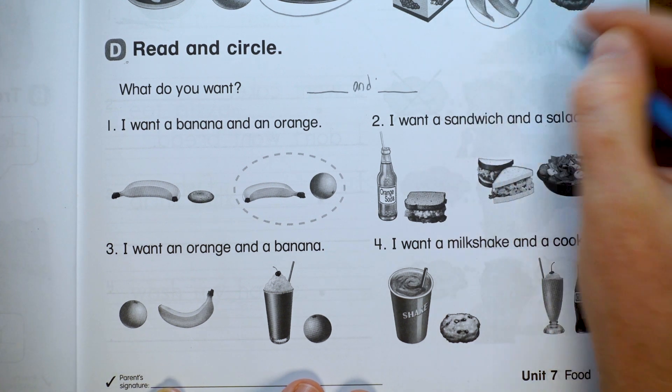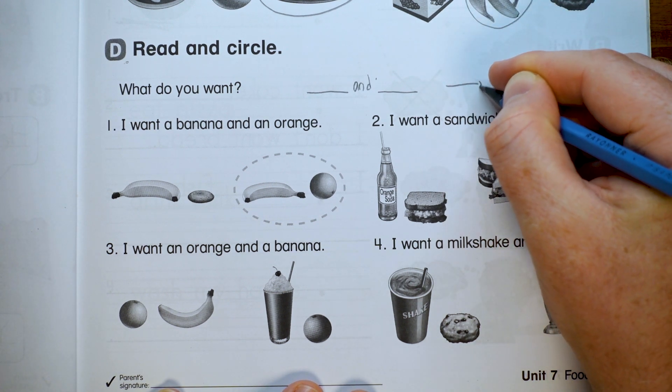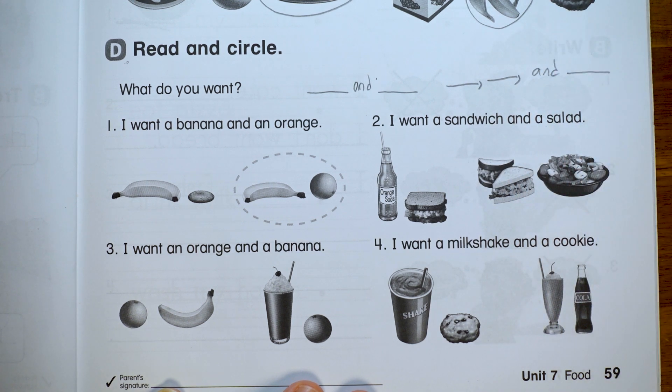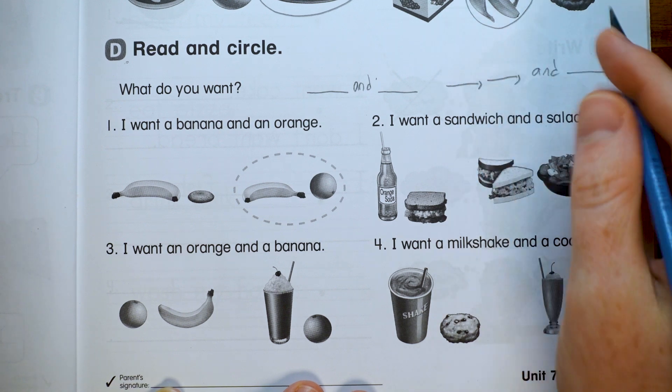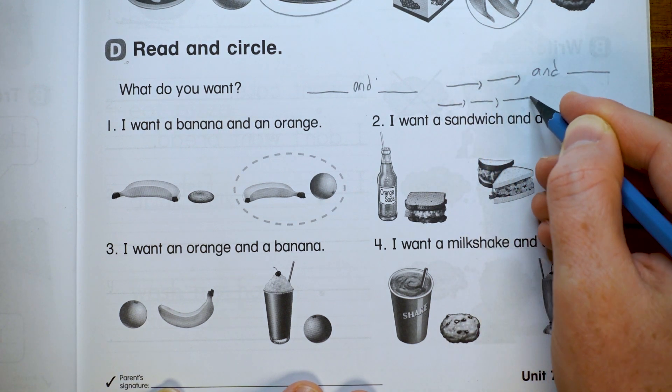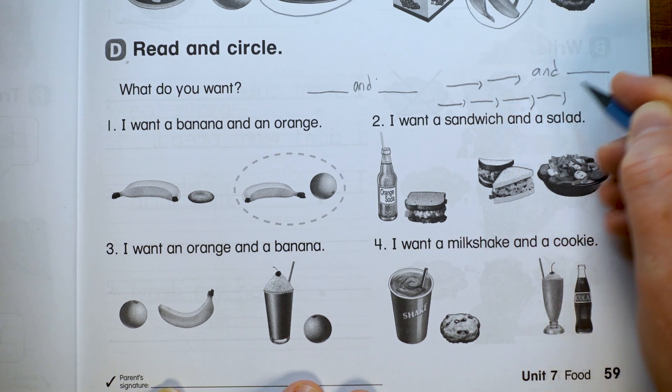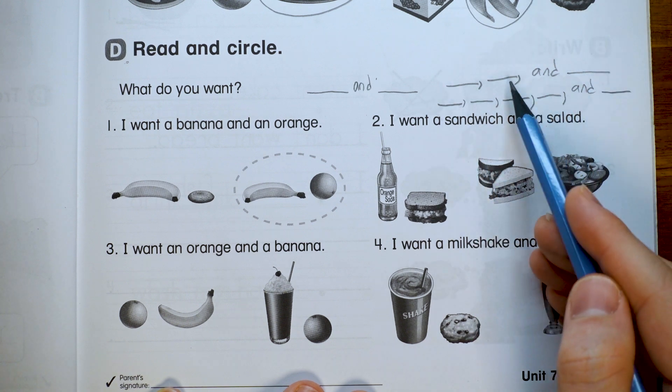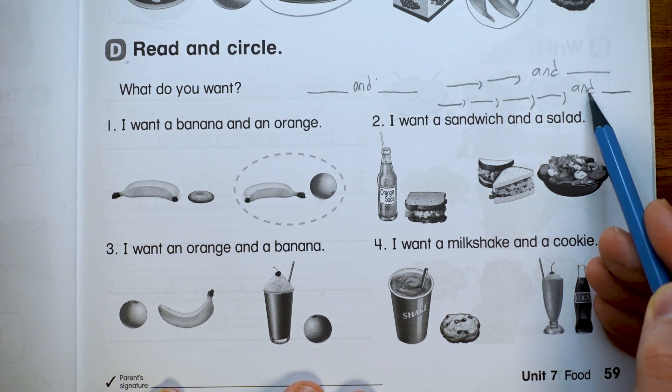And the only important thing here is that when we have two things, we can join them with 'and.' What if I had three things? Then I would go item, item, and item. And if I had, say, five things, then I would go item, item, item, item, and item. So we're always going to put 'and' at the very end. Let's start.